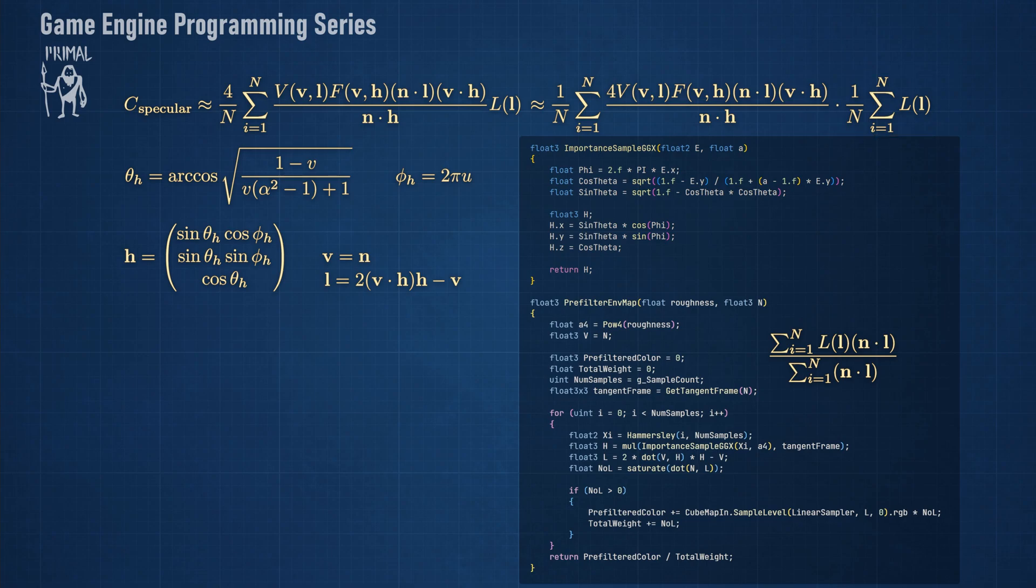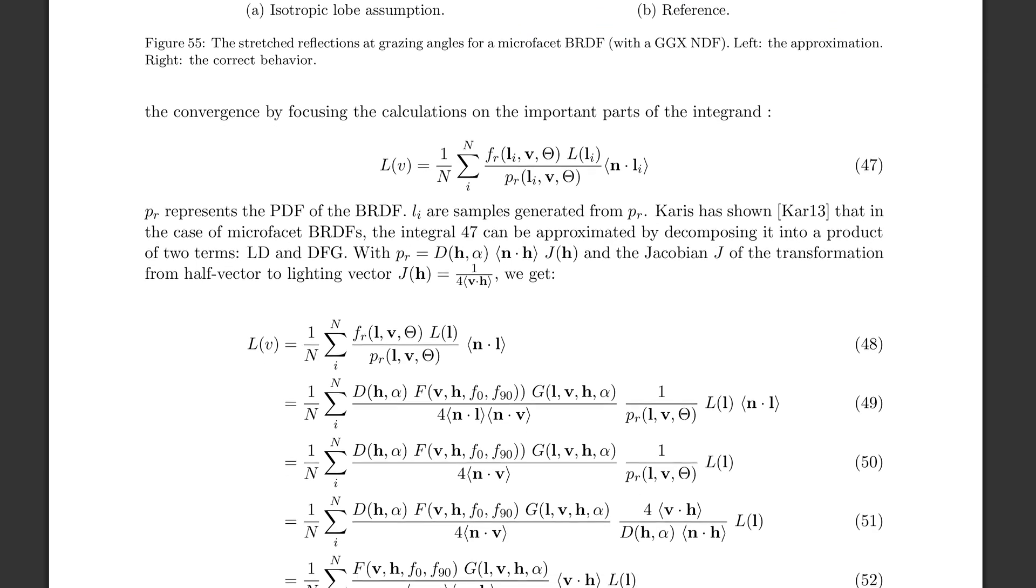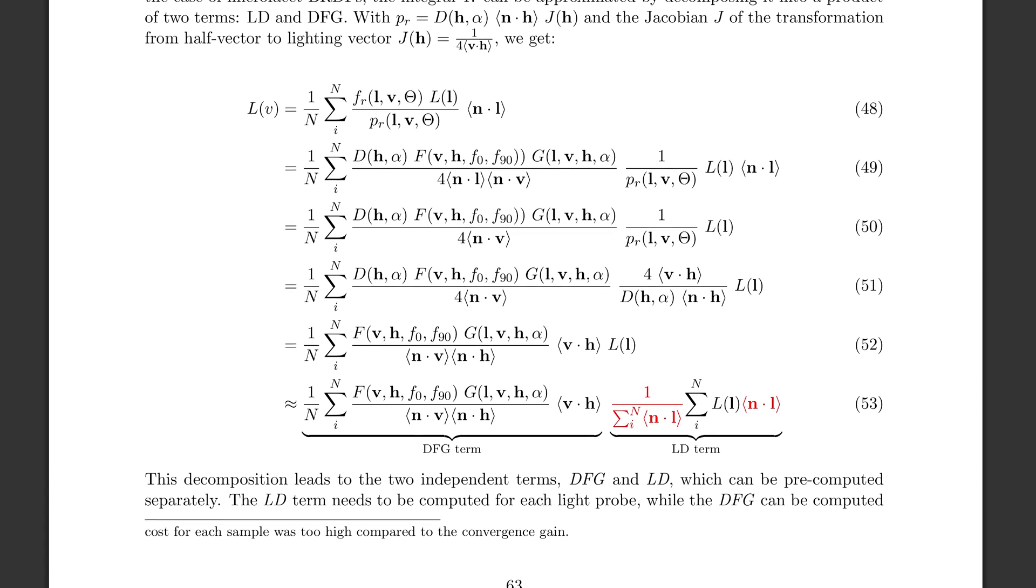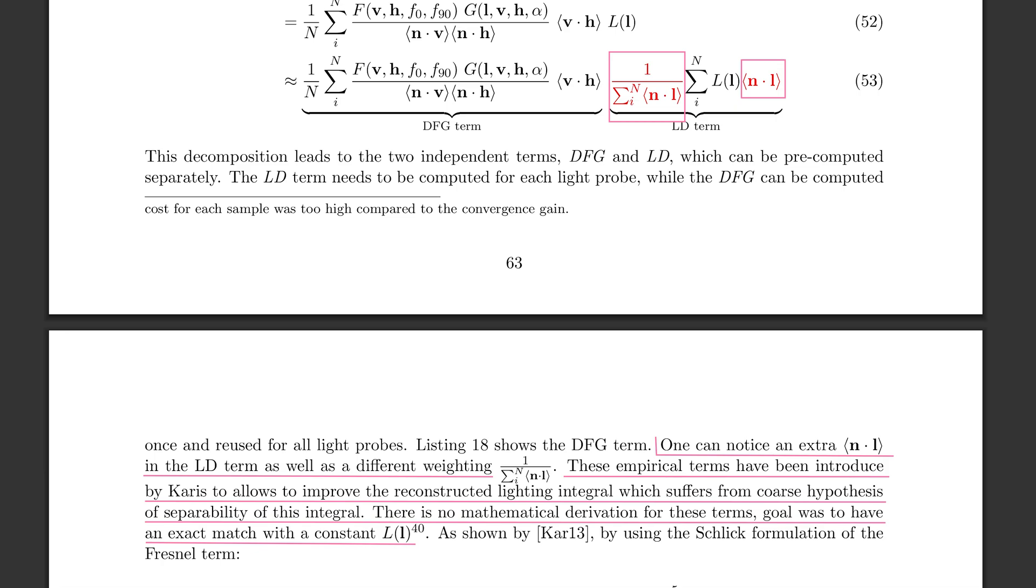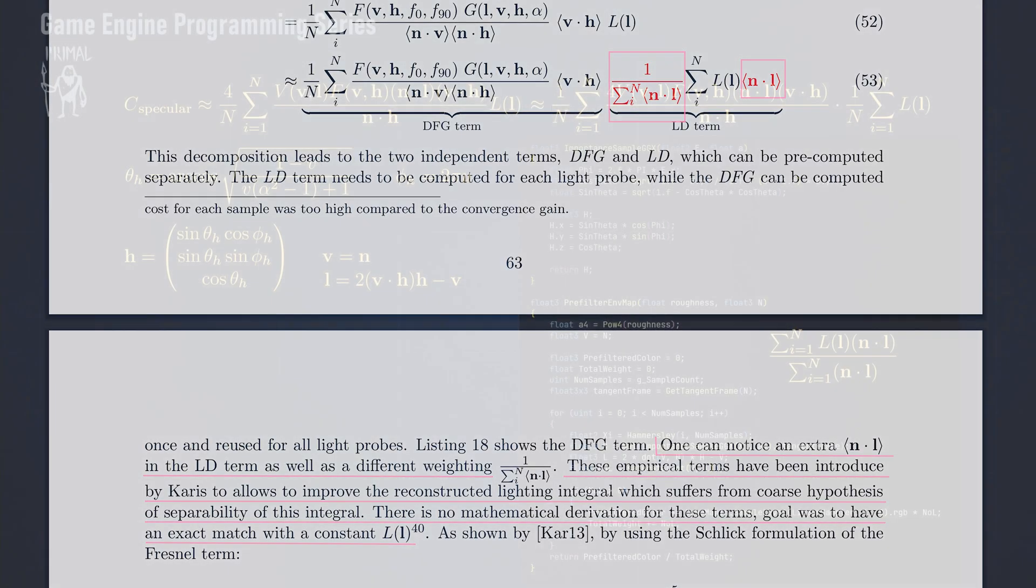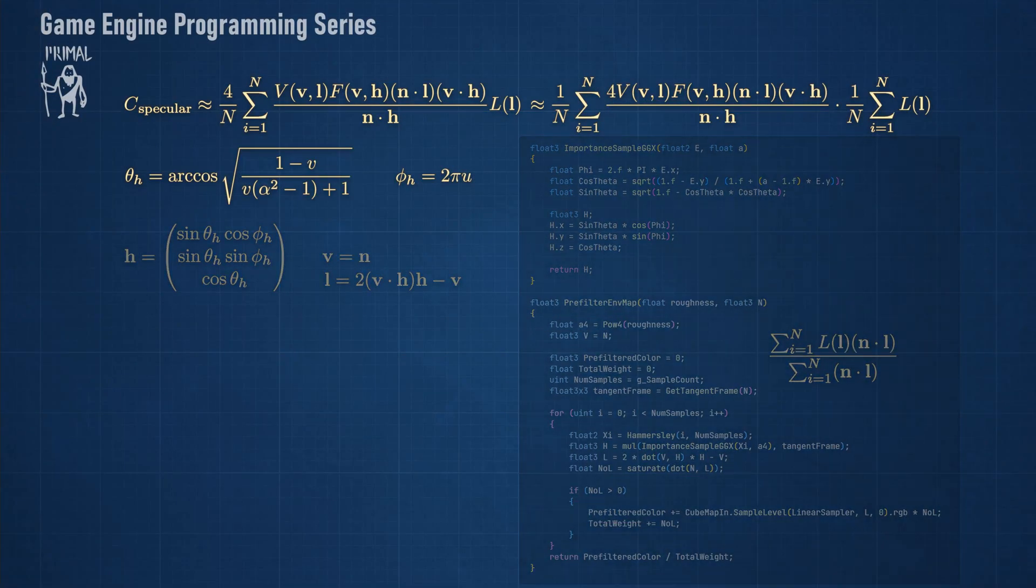This is also the way it's done in Unreal Engine and Frostbite Engine, which also closely follows this pre-filtering method. There's no mathematical derivation for this and it's empirically determined such that the resulting image better matches the ground truth. And this is all for the part that depends on the environment image.